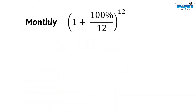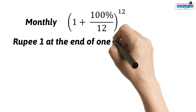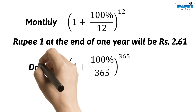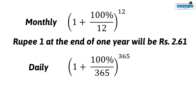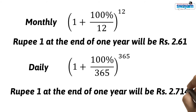Similarly, this will be the formula if the 100 percent growth rate is divided every month, and 1 rupee will become Rs. 2.61 at the end of the year. And if the growth or interest rate is compounded every day, the formula will be written accordingly. In our example of Rs. 1, 100 percent is nothing but Rs. 1.